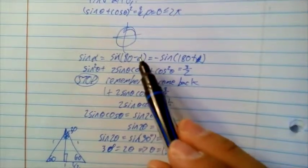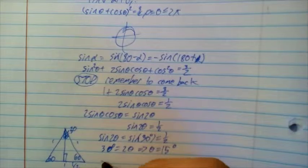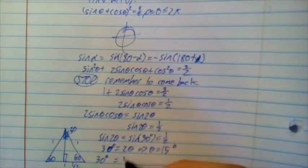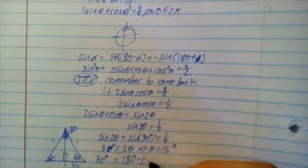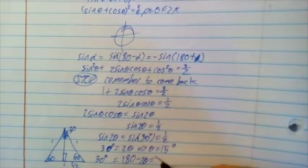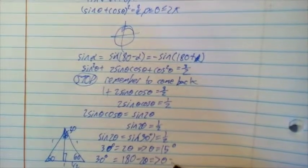However, remembering this equality over here, we also have that 30 degrees is going to equal 180 minus 2 theta, remember over here, and therefore theta is equal to 75 degrees.